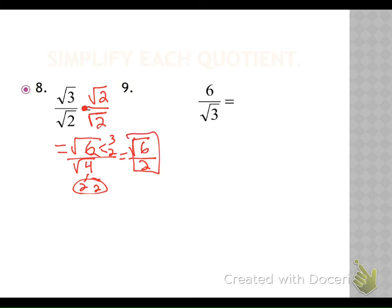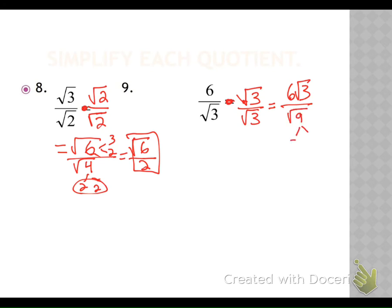Our next one: we have a six and a square root of three. Even though three and six have common factors, they're not in the same position — one's under a radical and one's not. So we have to rationalize our denominator first; multiply the top and the bottom by the square root of three. In the numerator there is no radical, so we just get six times the square root of three. In the denominator we have square root of three times square root of three, which is the square root of nine. Three and three break down — they come out — giving us six times square root of three over three. Does three go into six? Yes, it goes in twice. So we end up with two square root of three as our final answer.